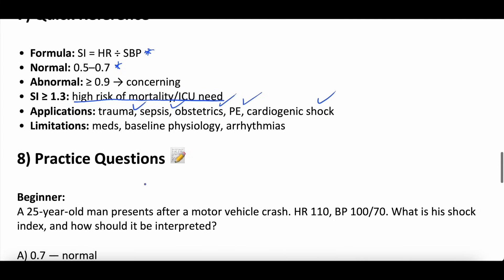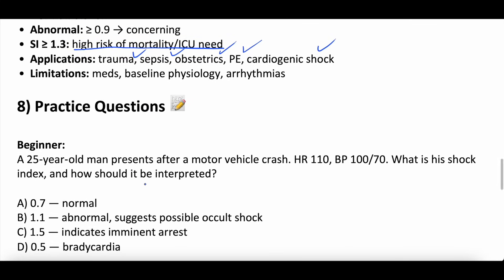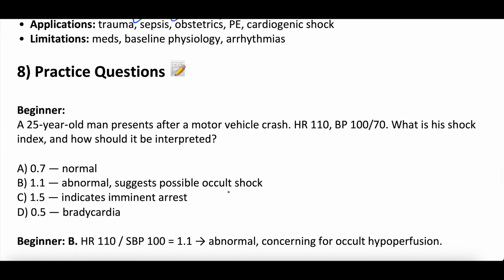Practice questions: the way these work is I'll read the question and answers, pause briefly, then give the answer — pause the video if you need more time. Beginner question: a 25-year-old man presents after a motor vehicle crash, heart rate 110, blood pressure 100 over 70. What is the shock index and how should it be interpreted? A) 0.7 normal; B) 1.1 and abnormal, suggesting occult shock; C) 1.5 indicates imminent cardiac arrest; D) 0.5 bradycardia. Correct answer is B. Heart rate 110 divided by systolic blood pressure 100 equals 1.1 — greater than 0.9, meaning abnormal, with concern for occult hypoperfusion or impending shock.